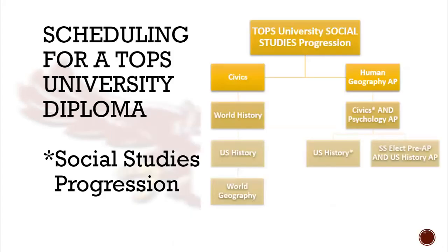All TOPS University students must also take 4 Social Studies courses. Of those 4, all students take Civics and U.S. History for graduation. The sequence looks different, though, depending on which Social Studies class was taken in the 9th grade. Students taking Civics in 9th grade typically take World History in 10th grade, U.S. History in 11th grade, and World Geography their senior year.